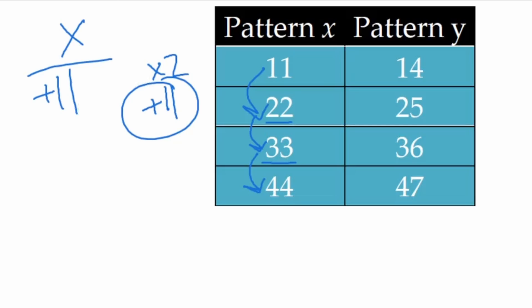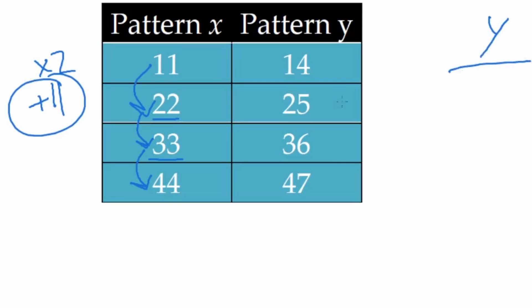And this rule is going to be adding 11. Adding 11 is our rule for pattern X. For pattern Y, I'm starting at 14 and going to 25. How could we get there mathematically? Adding 11 seems to work. Let's try starting at 25. It's true again, adding 11 works and it should work right here. So adding 11 is the rule for pattern Y.